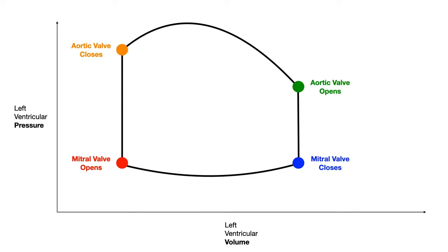So far in this video we've talked about how to draw the graph, what the axes represent, what the various points represent, which phases are systole and diastole, and we covered isovolumetric phases. The next part of this video will focus on using this graph to infer different types of cardiac physiology — the test writer is going to ask you about things like stroke volume, afterload, contractility, and preload.